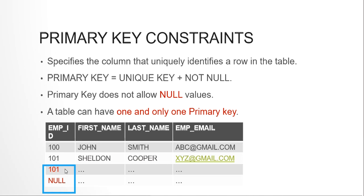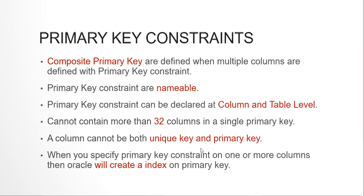A table can only have one primary key. You can have a composite primary key where you take two or more columns together, but that is still just one primary key — defined on multiple columns. For example, a combination of first name and last name can be a composite primary key. Don't confuse using two columns in a composite key with having multiple primary keys — it's still a single primary key, just defined on two columns.